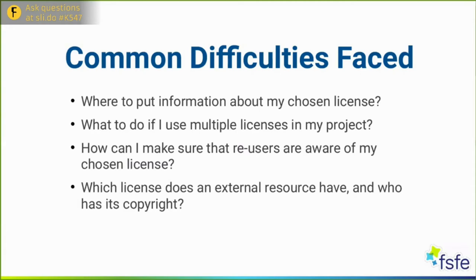The next problem: how can you make sure that people who intend to reuse your code are aware of the license you have chosen? For example, if you've used a copyleft license like GPL 3, this puts some obligations on the person reusing your code. The idea of copyleft, put simply, is that someone who releases a modified version of your work has to ensure that the modified work has the same rights preserved. So it's important that the person reusing your software knows it's licensed under a copyleft license and that they must release any modified version under the same terms.